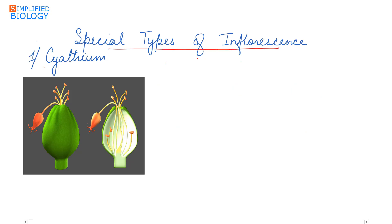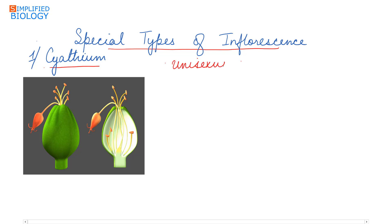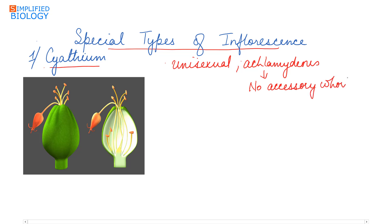Besides the racemose and cymose types of inflorescence, there are certain special types. The first is cyathium. In cyathium inflorescence, many flowers are produced and these flowers are unisexual and achlamydeous, meaning there are no accessory whorls — no calyx and corolla. The male flower is represented by the stamen and the female flower is represented by the pistil or carpel.